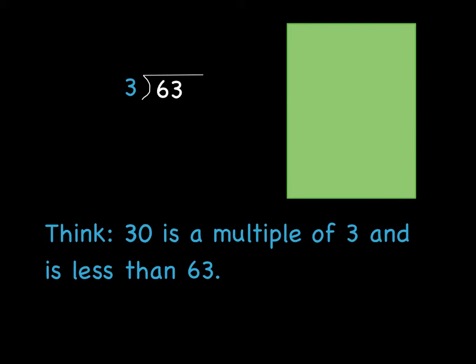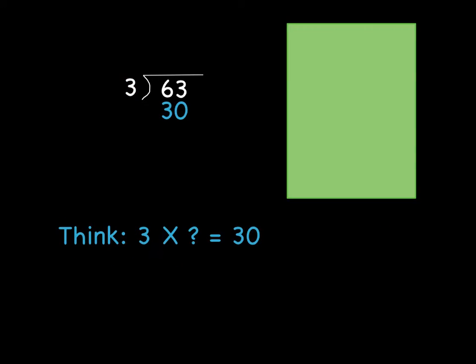And in this case, we know that 30 is a multiple of 3, because it's a very easy one, and it's less than 63. So we're going to take that 30 and move it right up here. Then we have to think, well, what was it that we multiplied 3 times in order to get 30? Or 3 times what number is 30? And that's 10. 3 times 10 is 30.